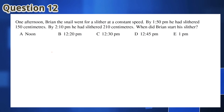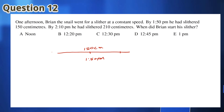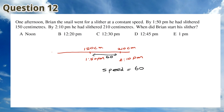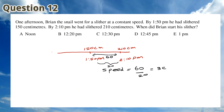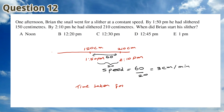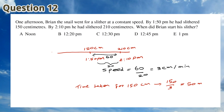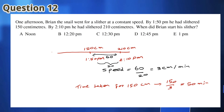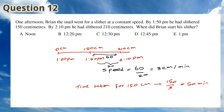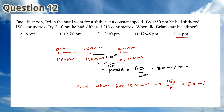For Question 12, in the 20 minutes between 1:50 p.m. and 2:10 p.m., Brian slithered a total of 210 minus 150 = 60 centimetres. So Brian slithered at a rate of 3 centimetres per minute, and therefore he took 50 minutes to slither 150 centimetres. This means that Brian started at 1:50 minus 50 minutes, which is 1pm. This means that the answer is E.